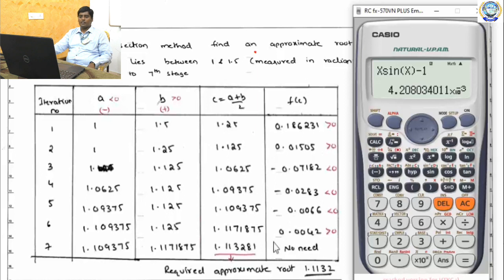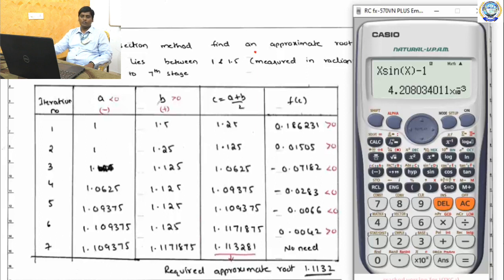Since this is the seventh stage and the problem only requires seven iterations, we just need to compute the final average — no need to evaluate f(c₇). The approximate root is the average of the current a and b values, and we can stop there.